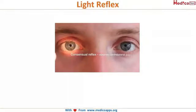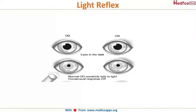Now let's look at this image. I'm throwing light on the right eye of this patient, and you can see the direct light reflex in this eye and the consensual light reflex in the other eye. The pupils are constricted equally to the same size. OD and OS are the right eye and left eye respectively. When I throw light on the right eye, the left eye also constricts along with the right eye — that is the light reflex.